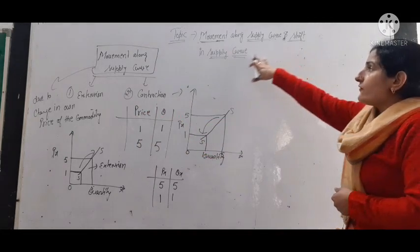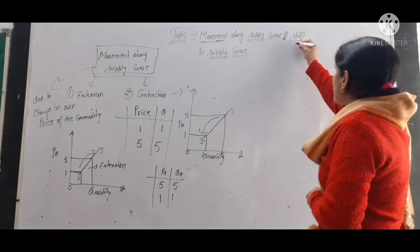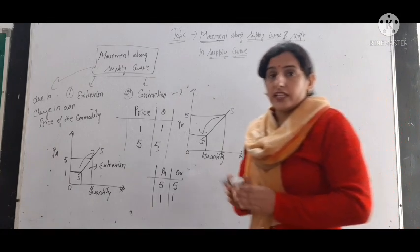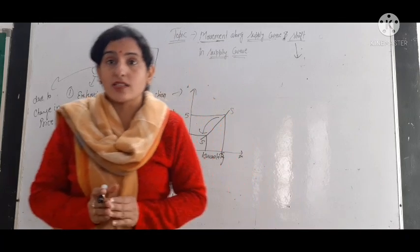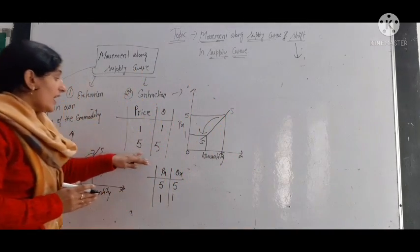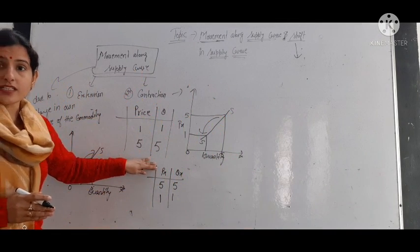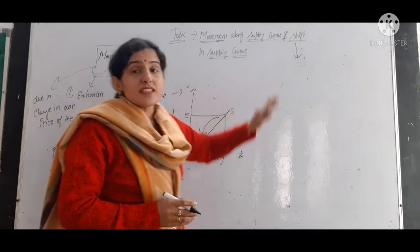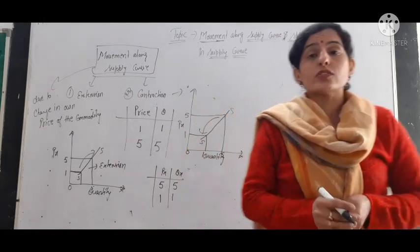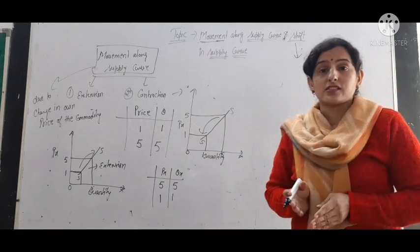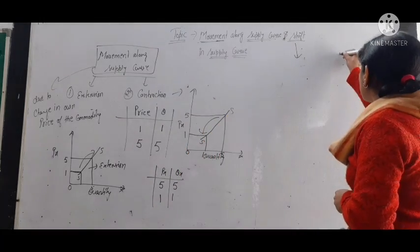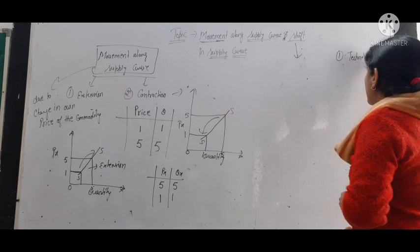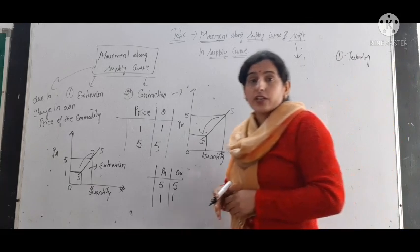Now we have the shift in supply curve. Shift in supply curve is due to other factors — here, the price of the commodity remains constant. In the case of movement along the curve, other factors remain constant and it is due to change in price. But in shift, price remains constant and supply is affected by other factors. We have discussed these other factors in previous videos.